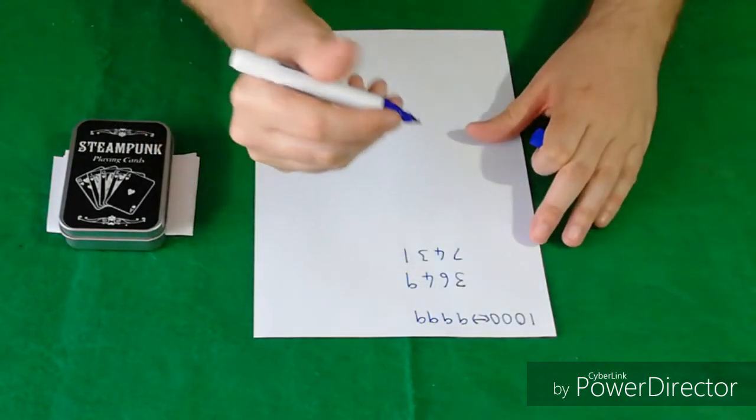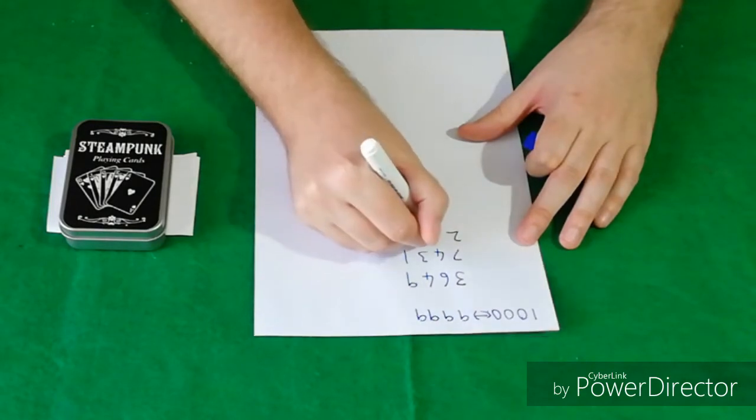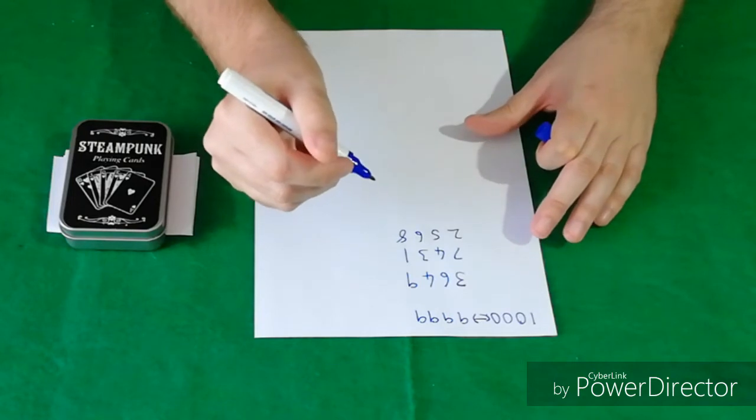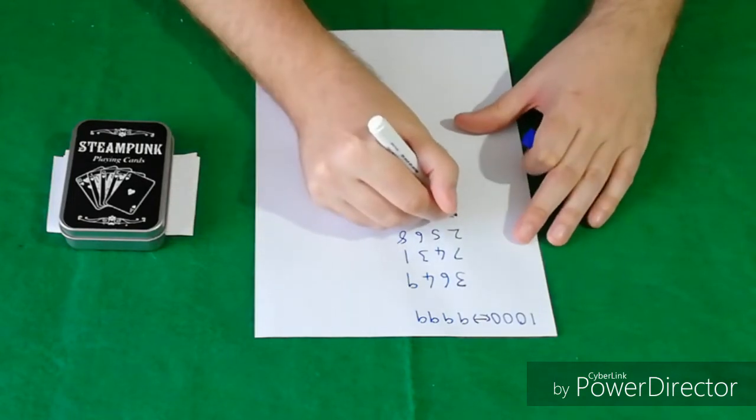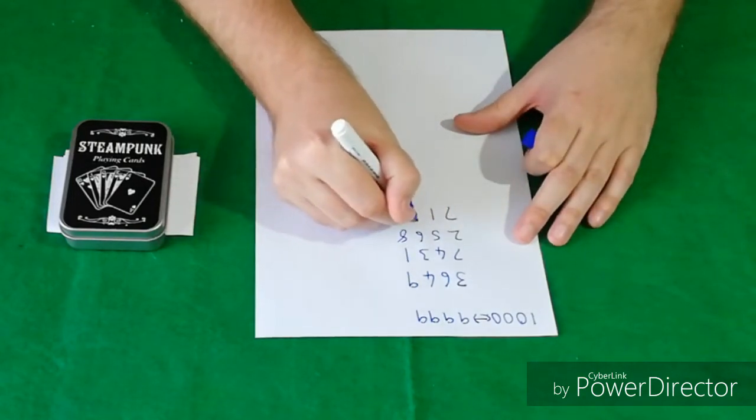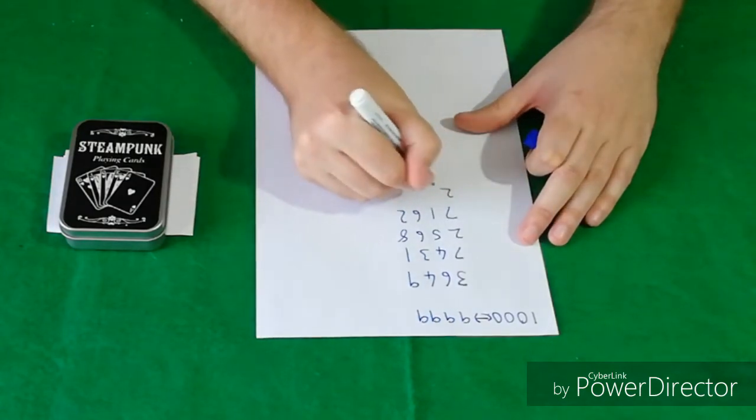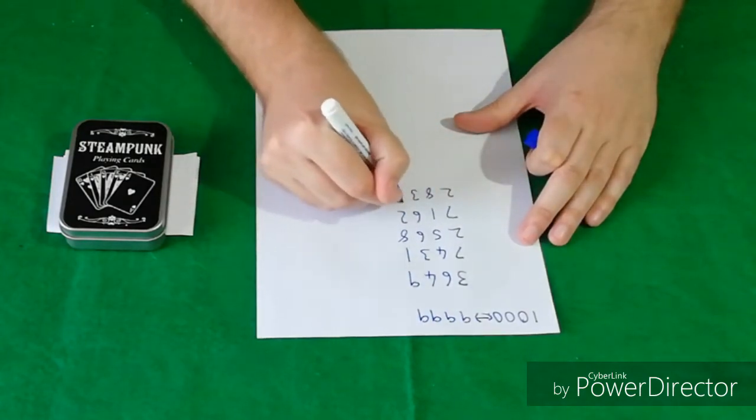You're going to tell them okay so now I'm going to write a number. Let's go for 2568. Then they write another number. Let's go for 7162. And then you write one more number. Let's go for 2837.